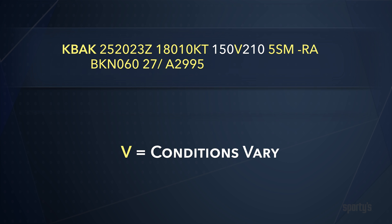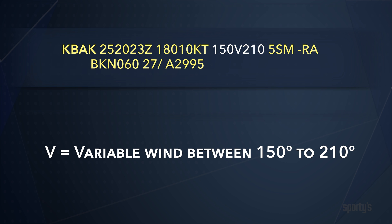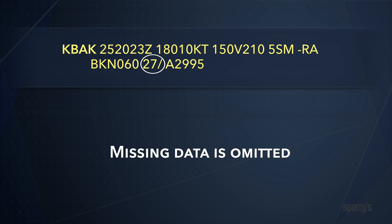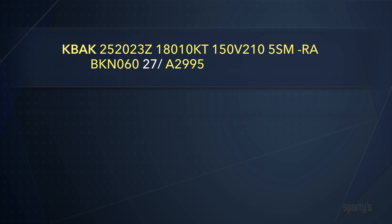The letter V separates two values when the indicated condition varies. So here, the wind, while favoring 180 degrees, is actually variable between 150 and 210 degrees. VRB is used when the wind direction is variable and less than 6 knots — the theory being the direction is not as significant when the wind is less than 6 knots. A critical note about METARs: when data is missing, it is simply omitted from the report. Knowing the sequence is important so you can recognize when something is not reported. In this example, the fact that nothing follows the temperature is a clue that the dew point is missing.